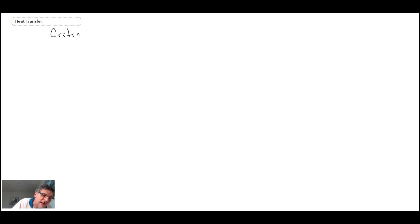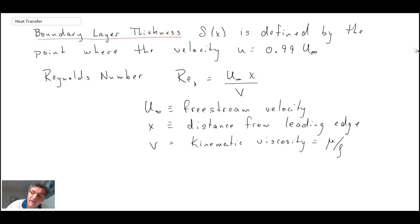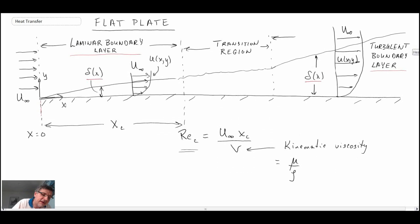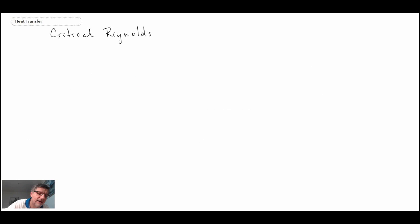And the reason why there are different values is the transition process is dependent upon a number of different things. One of them is the baseline turbulence in the flow coming in to begin with. We always assume that this flow is perfectly laminar coming in, but there's always residual turbulence in any kind of flow field that you'll have. And consequently, it would be dependent upon that, and it would also be dependent upon surface roughness, how rough the flat plate is, and that can have an impact on this critical Reynolds number.